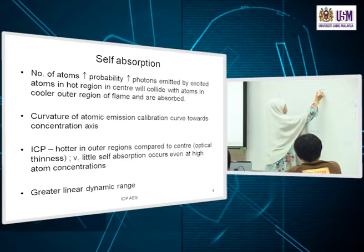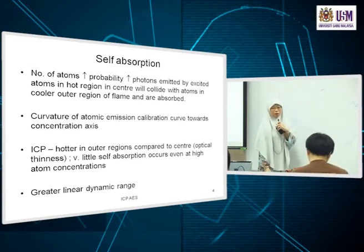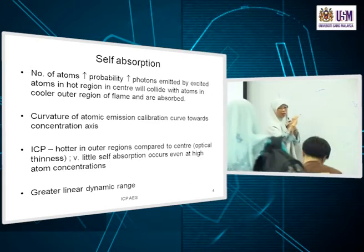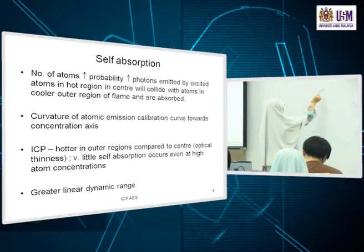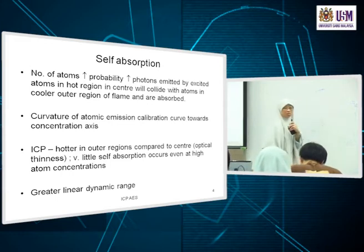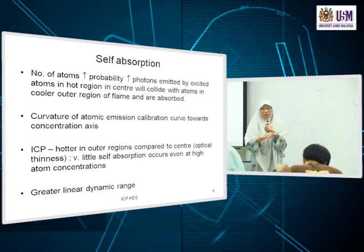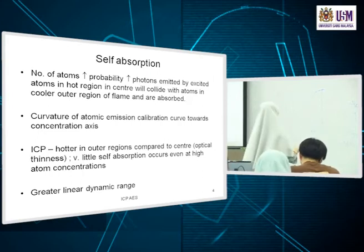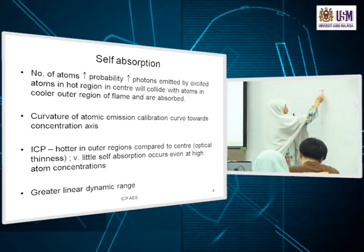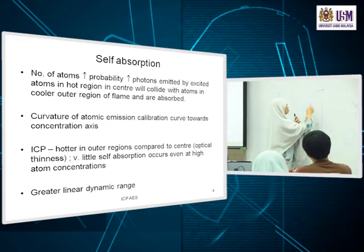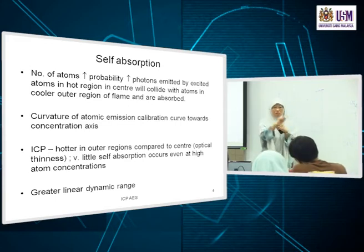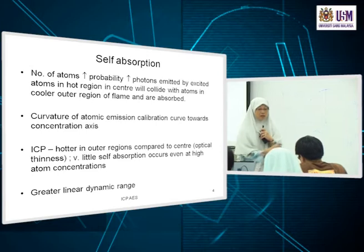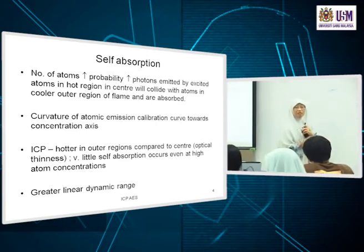However, if your sample falls in the non-linear region, and if you have enough standards to characterize that curve, you can still use it to find the concentration. This is not a case of Beer's law not being obeyed — it is a real phenomenon occurring in the flame. So you can still use that part of the curve, provided you know its shape. Self-absorption in flame emission spectroscopy occurs at higher concentration.